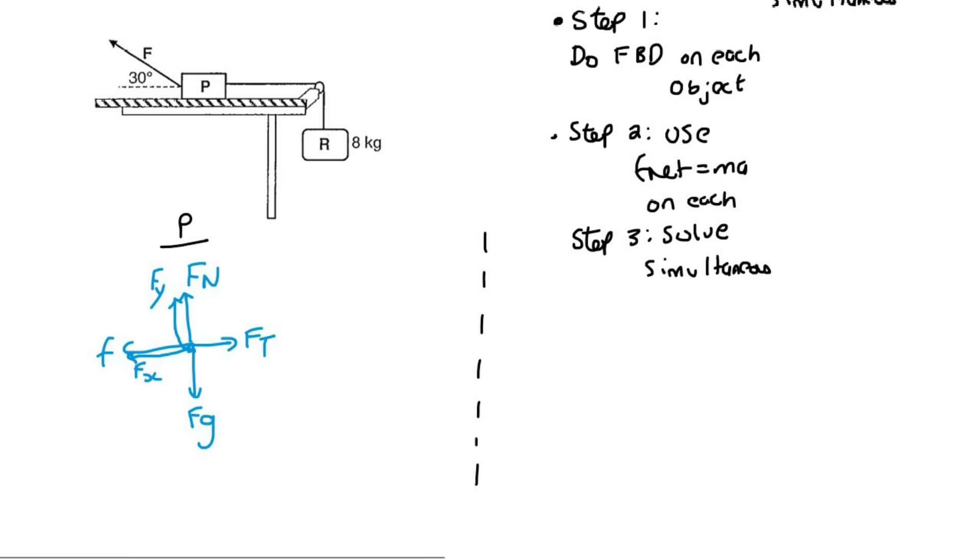So I normally divide my page in half. This can be for object P, and then on this side here, I'll do object R. So for object R, the only force acting on that one would be gravity and then there would be a tension force. Now, we need to have an overall idea of the direction. So we know it's not moving, but they did tell us that the friction force on P is acting towards the left. That means that the system is about to go to the right-hand side and down. So it's about to do this. And so let's choose that as our overall direction choice. So step one is done. We've done a free body diagram on each object. Now we're going to use F net equals MA on each one.